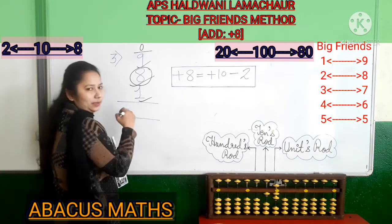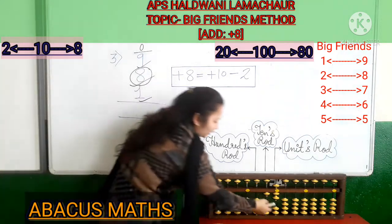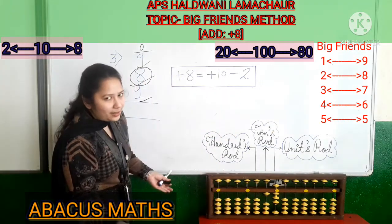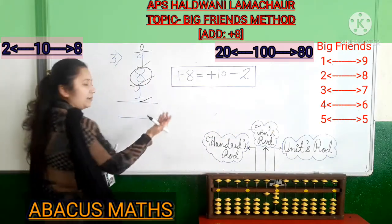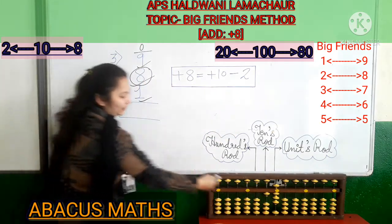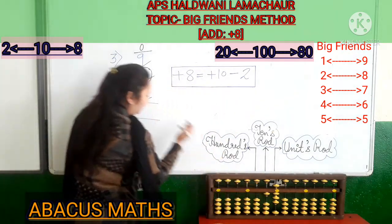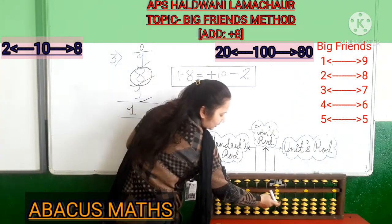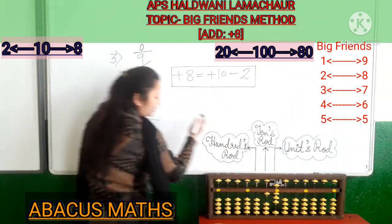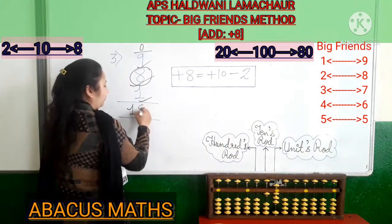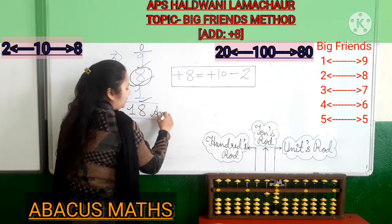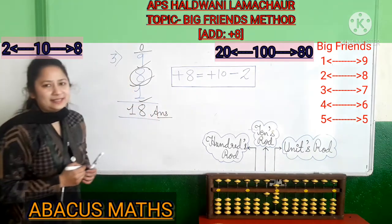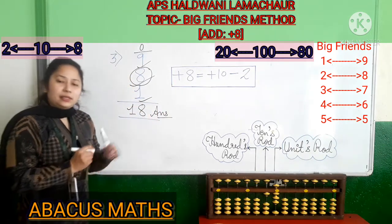Your 8 is added. Now add 1 in the 1s slot and the sum is completed. One in the 10s slot, and 5, 6, 7, 8 in the 1s slot. And 18 is your answer.